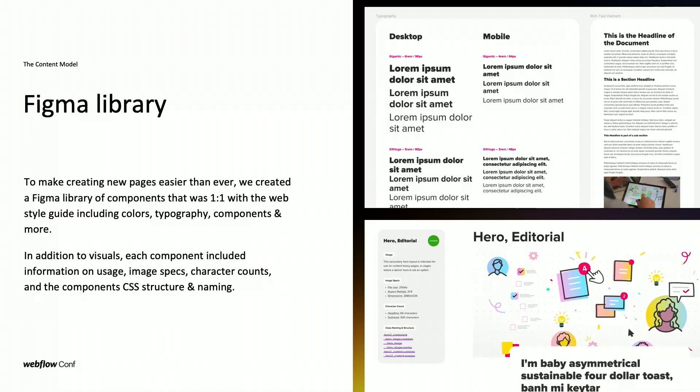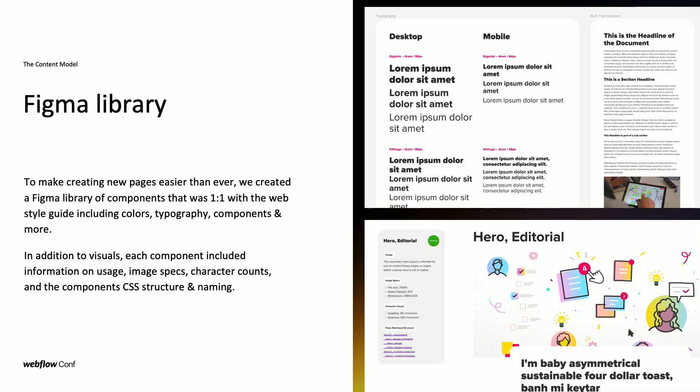To further scale faster and make our processes leaner, we developed a Figma library, which is basically a one-to-one representation of that WebStyle guide. Any classes, colors, components, or typography you see in the WebStyle guide is reflected in our Figma library. This makes it easier for us to build new pages — and not just us, but our creative partners as well. So if any team at Mural needs to create a web page in Webflow, they have access to the visualizations of our classes, components, and typography colors. Teams that have used this include legal, content teams, and product marketing.